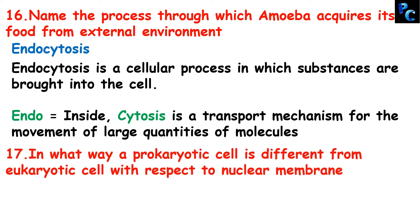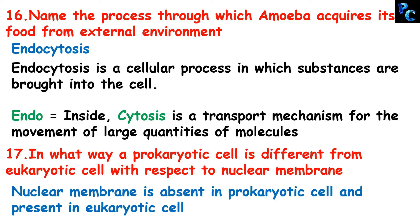In what way is a prokaryotic cell different from a eukaryotic cell with respect to the nuclear membrane? Nuclear membrane is absent in prokaryotic cells and present in eukaryotic cells, because prokaryotic cells have a primitive nucleus and eukaryotic cells have a true nucleus.